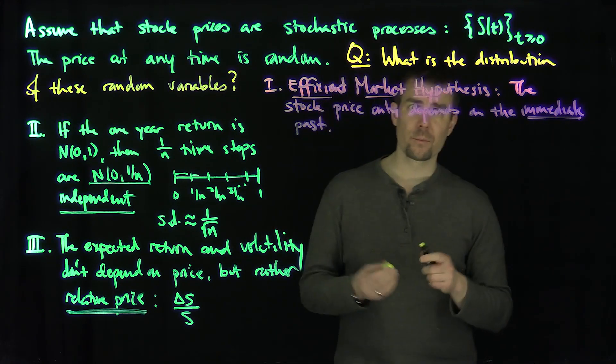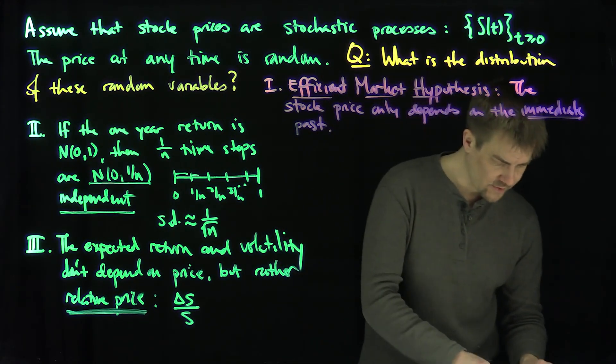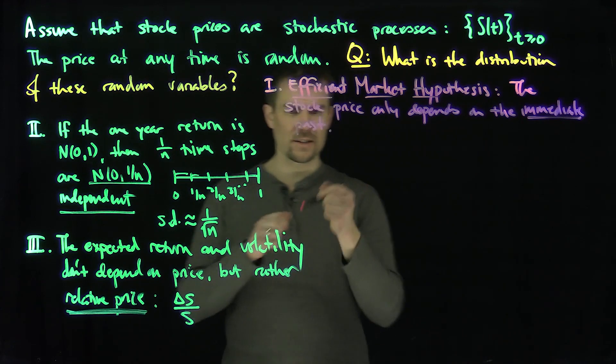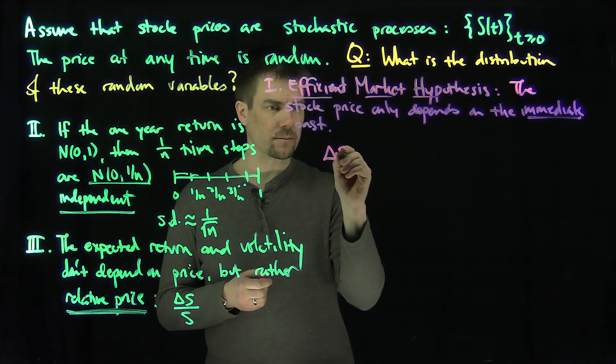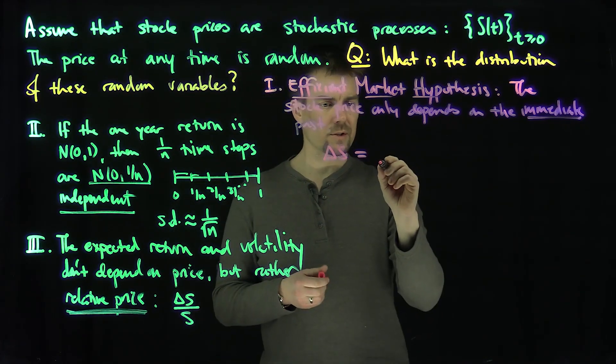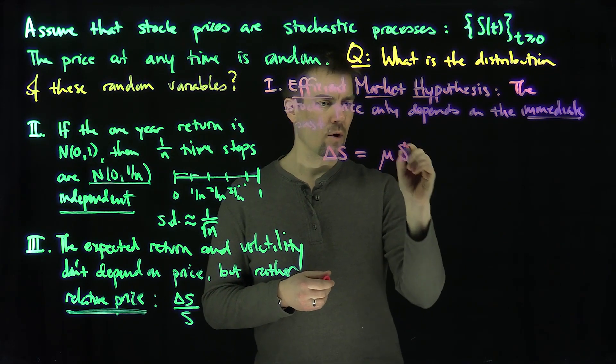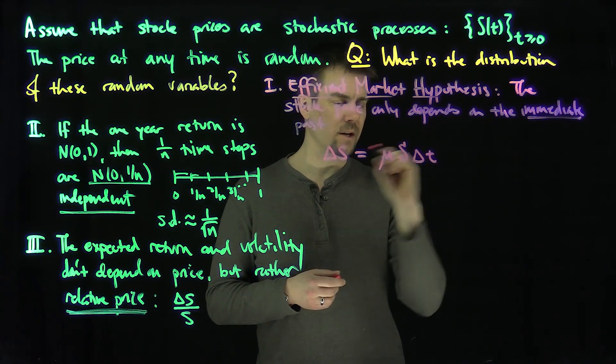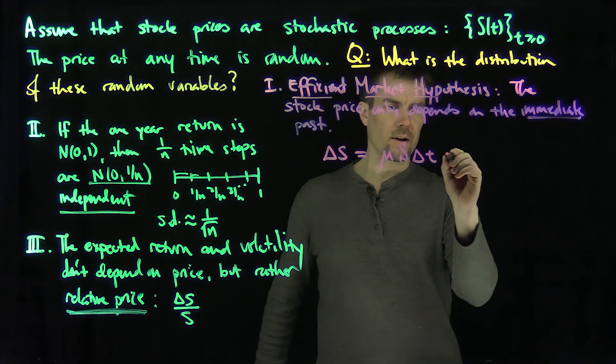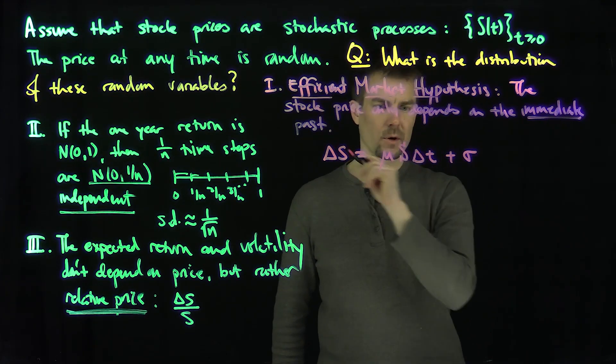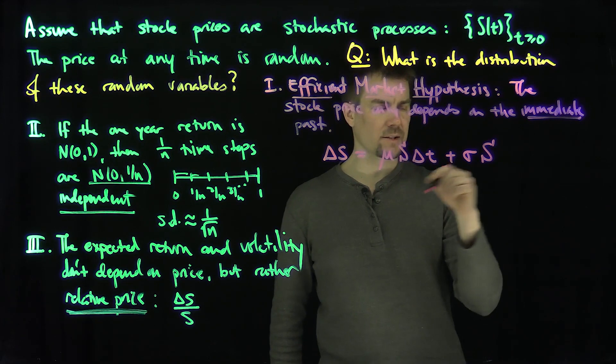So with these assumptions, we can formulate our model. Our model says that the change in stock price is going to be a constant drift mu over a time delta T, and there's going to be a volatility sigma S.